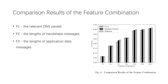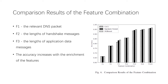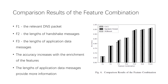We then study the effect of feature combination, denoting the length of relevant DNS packets, handshake messages, and application data messages as F1, F2, and F3 respectively. The figure shows that classification accuracy increases with feature enrichment. When using only one feature, the length of application data messages provides more discriminative information than the other two features, likely because application data message lengths are relevant to the payload transmission pattern of the application.